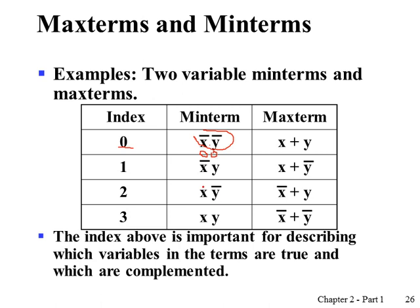For another example, if X is in true form we consider it as bit 1, and Y is in complemented form we consider it as bit 0. So binary 10 is decimal 2, meaning the index of that minterm is 2. In maxterm, the index is defined similarly but with true form considered as bit 0 and complemented form as bit 1. So for a term where both variables are complemented, binary 11 is decimal 3, giving a maxterm index of 3.